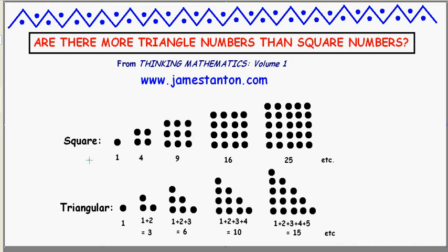Welcome. Let me explore a curious question. Here are two classic types of figurate numbers. The square numbers: 1, 4, 9, 16, 25. They come from arranging pebbles into square shapes.